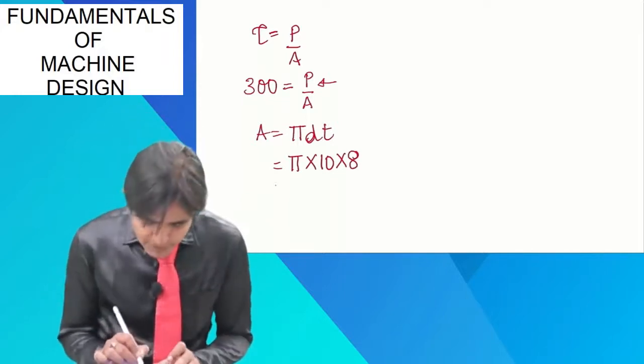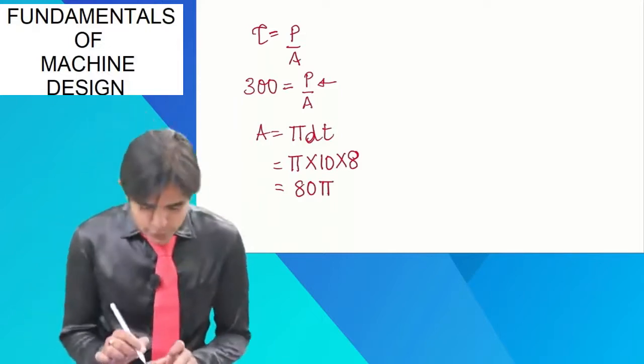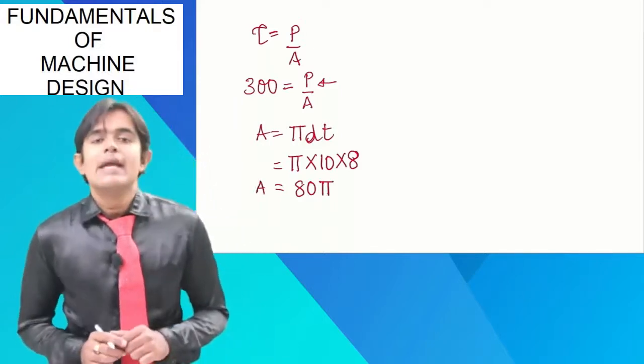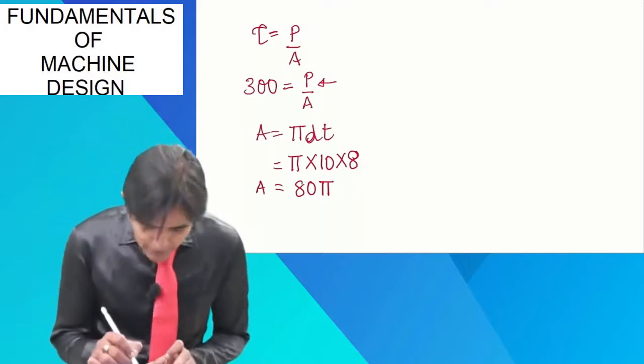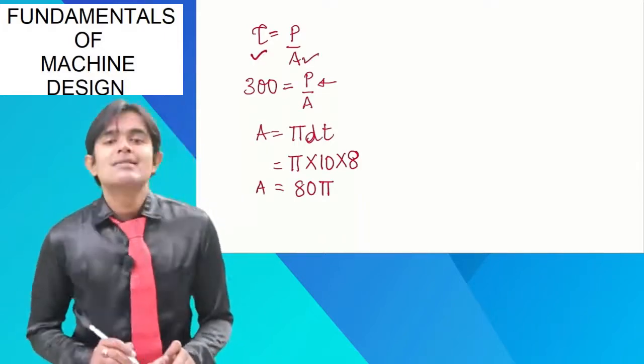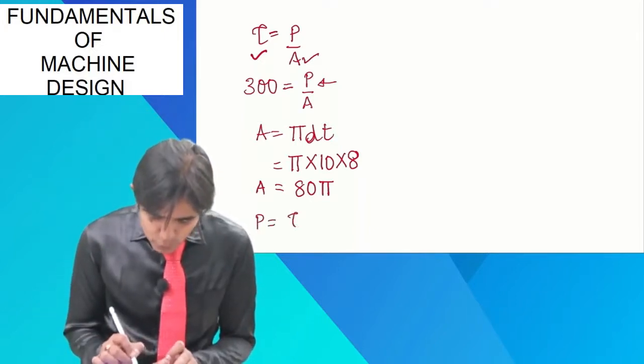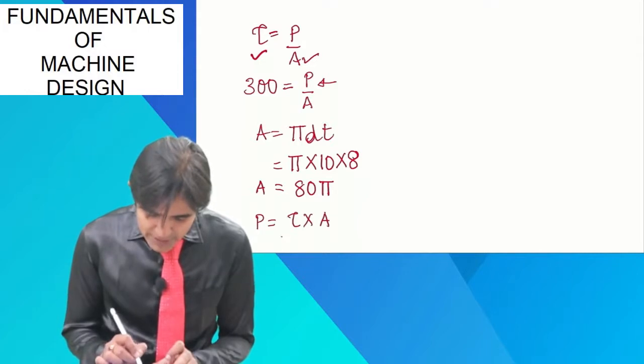Right? So, this is going to be 80 pi, so area is going to be 80 pi. So, I found out the area and shear stress is already given, so I can write down P is equal to tau into A, so it is going to be 300 into 80 pi.